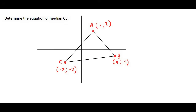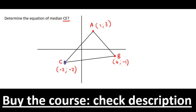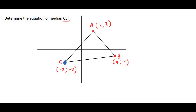Here is a practice example. We've got a triangle ABC and our question says determine the equation of the median CE. So we would start at C, and we know that a median hits the opposite side at the midpoint. Now we know that a median is a straight line so we're definitely going to have to use y equals mx plus c. But to find the gradient of CE we would need to know the coordinates of point E.